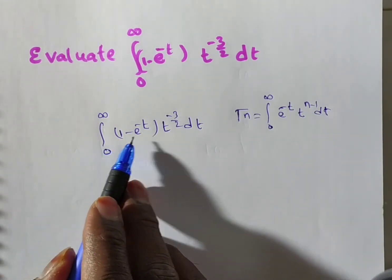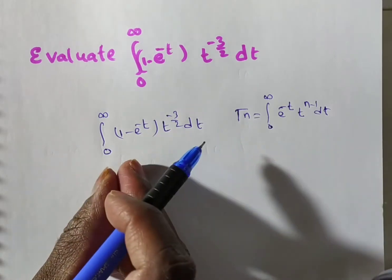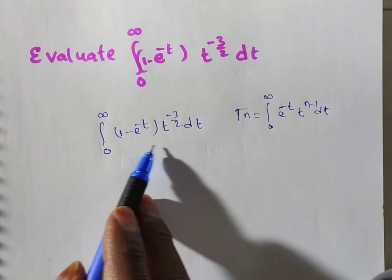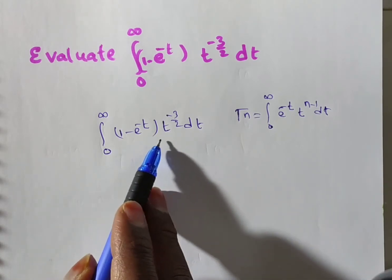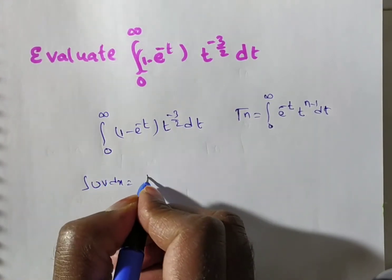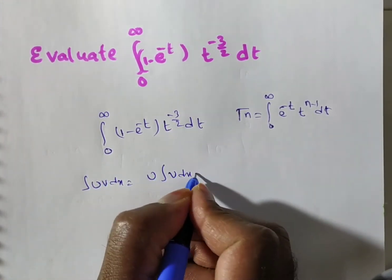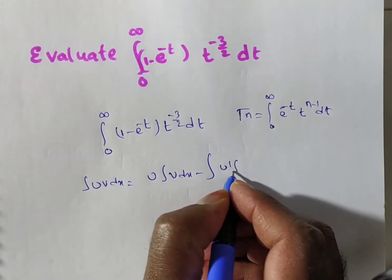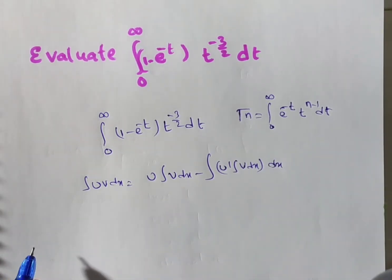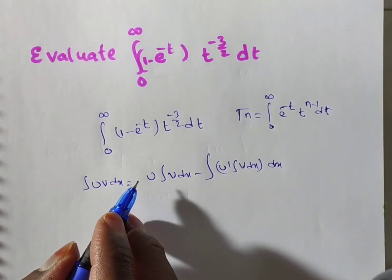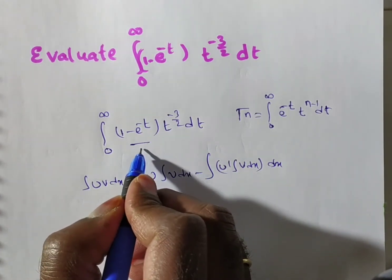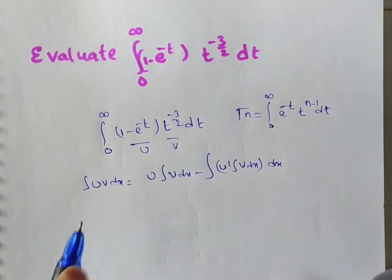Here we have (1 minus e to the power minus t), which if multiplied out gives two terms: ac minus bc. Since we have a product of two functions, we use the integral UV rule: integral of u·v dx equals u times integral of v dx, minus integral of u-dash times integral of v dx. Since there are negative (inverse) powers, it is better to take (1 minus e to the power minus t) as u and t to the power minus 3 by 2 as v.